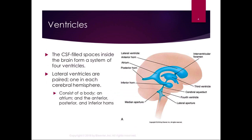The CSF-filled spaces inside the brain form a system of four ventricles. There are two lateral ventricles, one in each cerebral hemisphere, with a body, atrium, and anterior, posterior, and inferior horns — though you don't need to know that. The interventricular foramen drains into the third ventricle. From the third ventricle to the fourth ventricle there is a passage called the cerebral aqueduct. Then from the fourth ventricle it goes into the subarachnoid space and gets reabsorbed into the venous circulation — that one-way flow: lateral ventricles, interventricular foramen, third ventricle, cerebral aqueduct, fourth ventricle, subarachnoid space. You can see how that fluid inner core of the brain provides a little bit of cushioning.